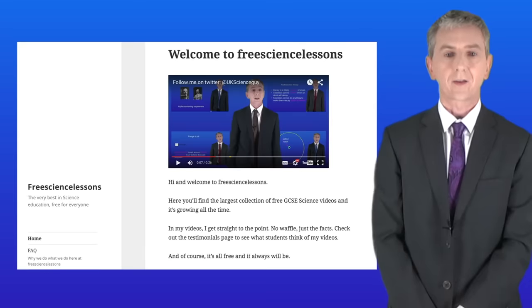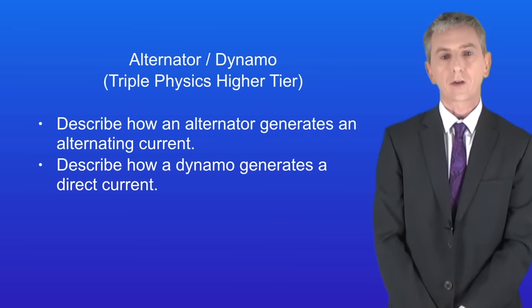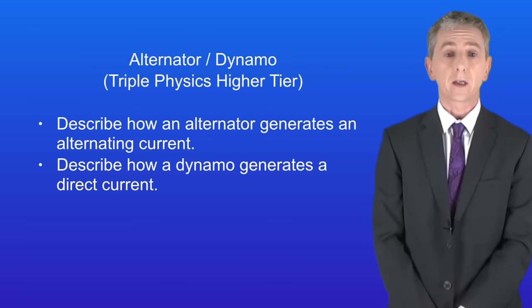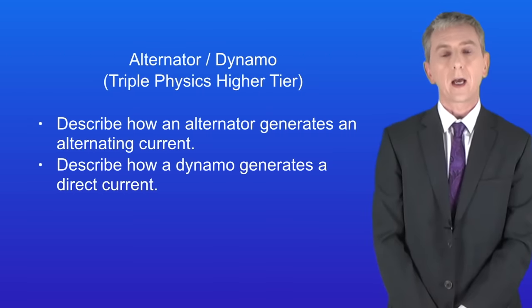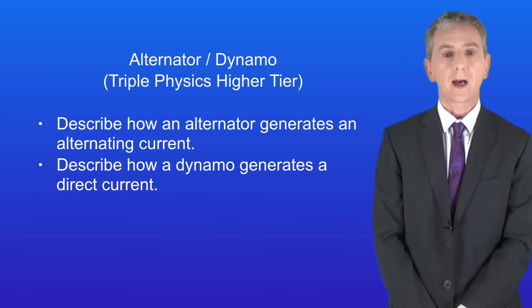Hi and welcome back to freesciencelessons.co.uk. By the end of this video you should be able to describe how an alternator generates an alternating current, and how a dynamo generates a direct current. This is for triple physics higher tier only.